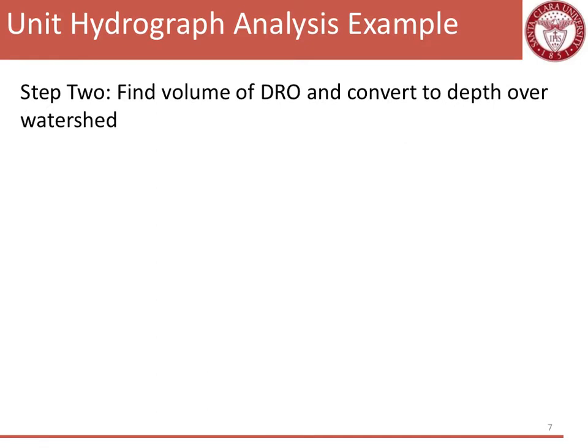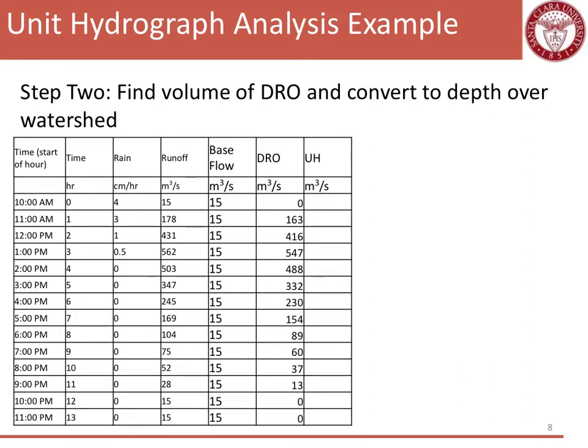The second step is to find the volume of that direct runoff and convert it to a depth over the watershed. The approach we are going to do is to take and sum up the direct runoff, which will be in CMS, and then convert that to a depth, just like we've done many times for total rainfall.